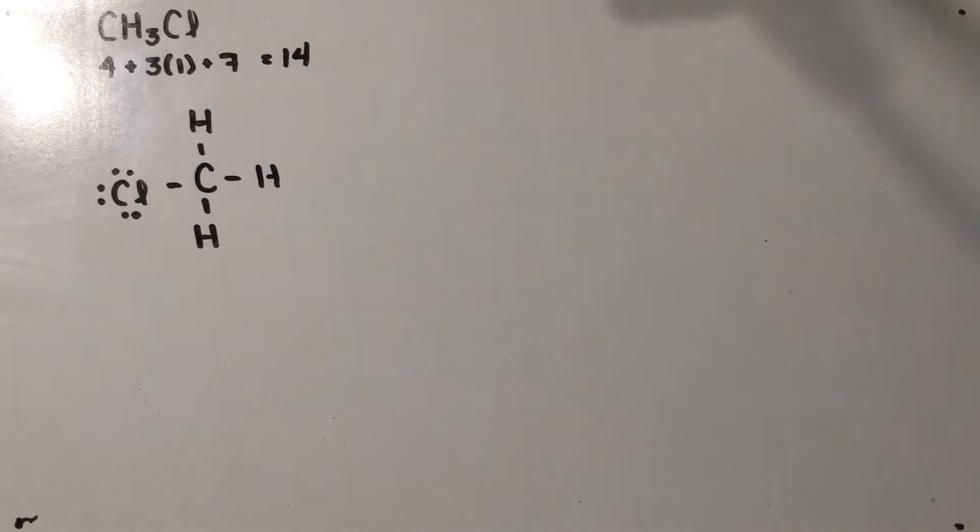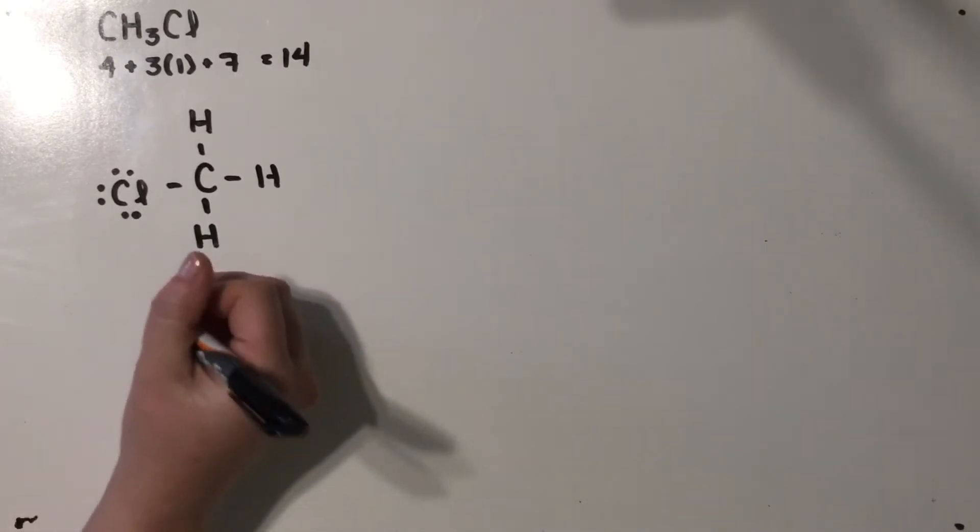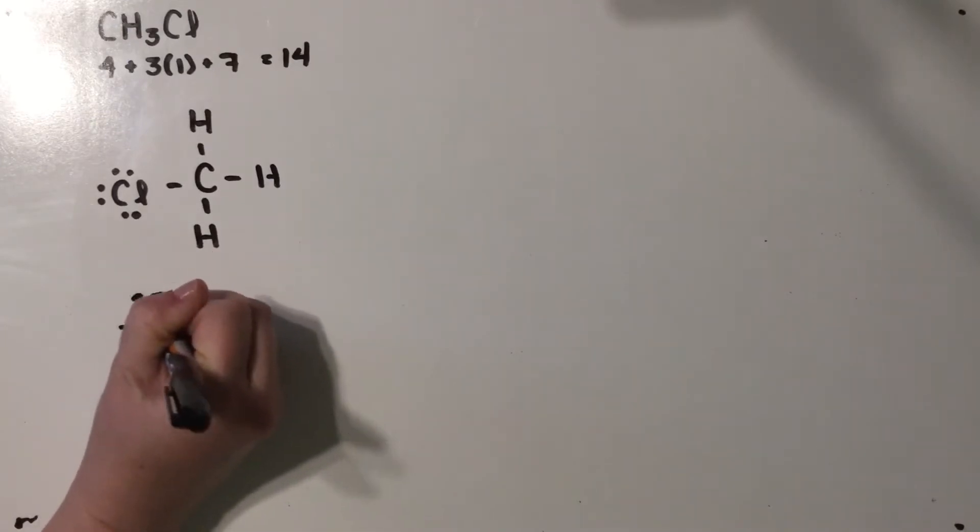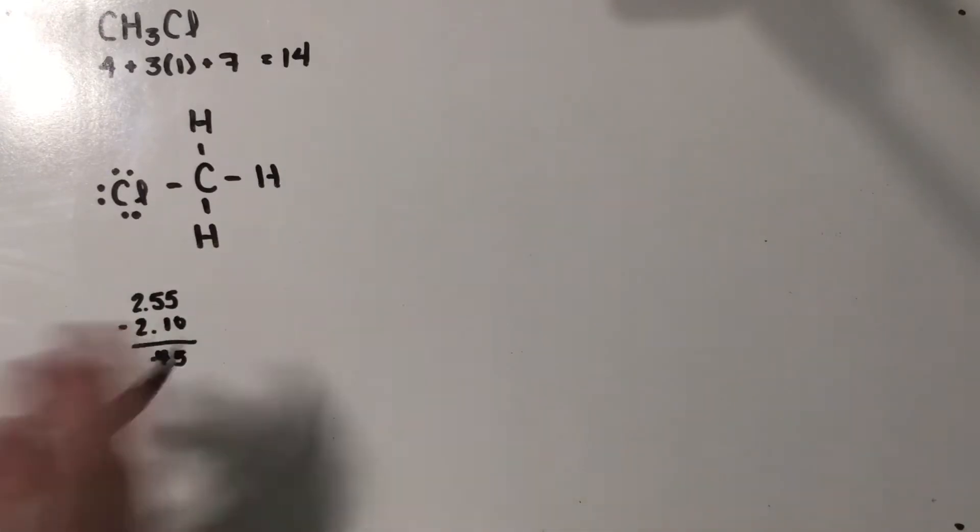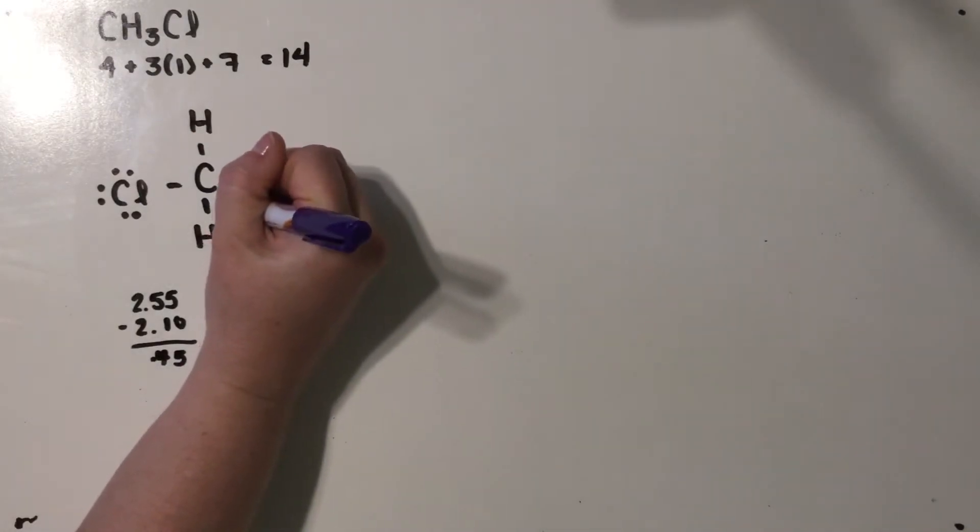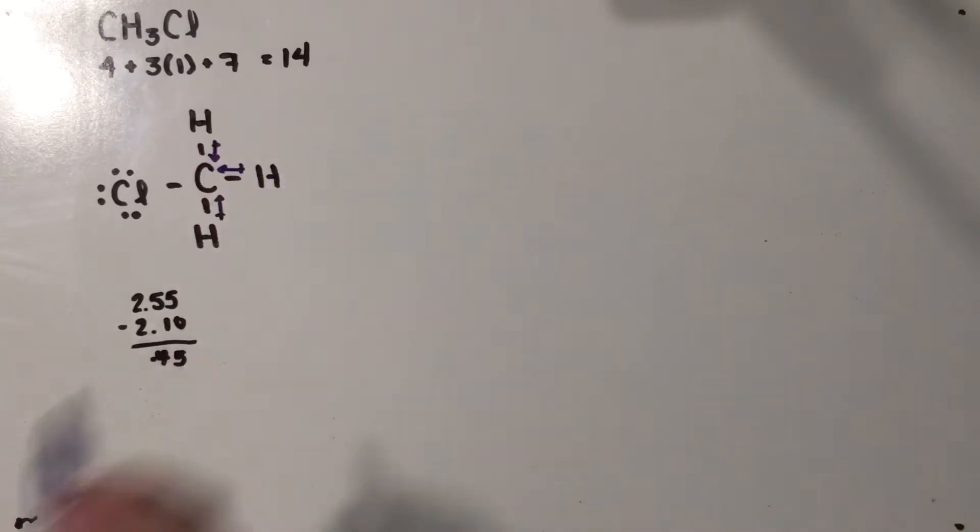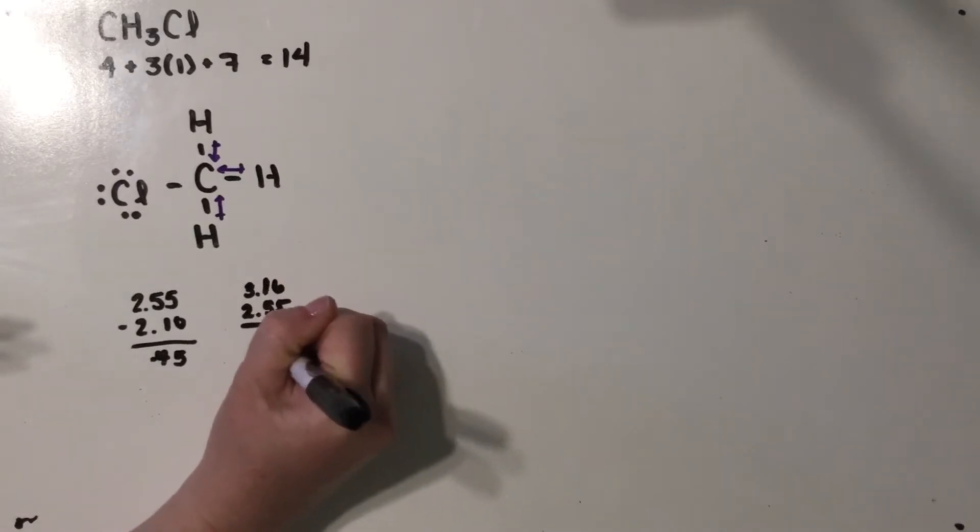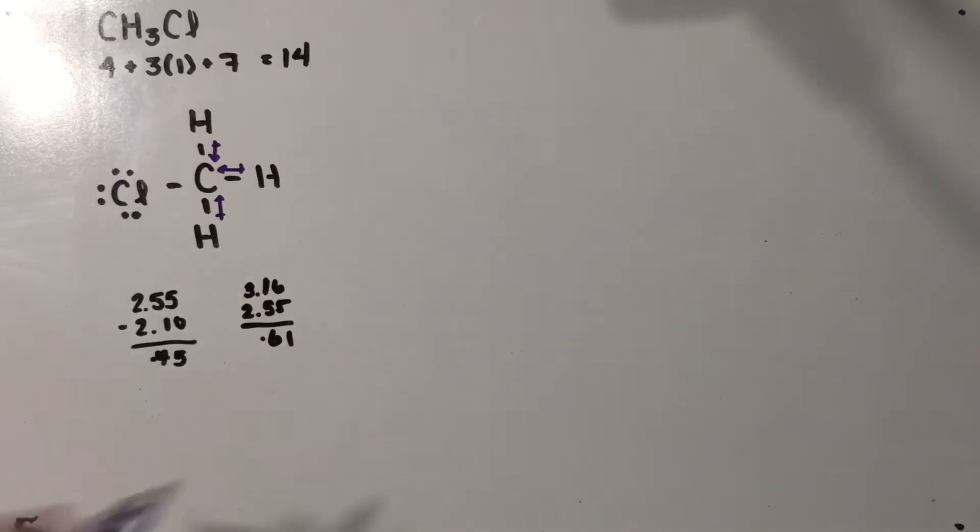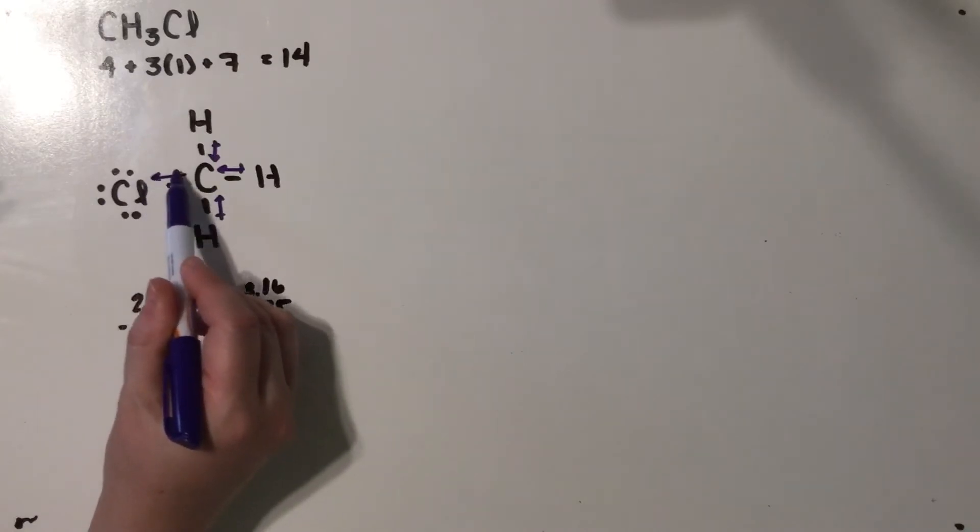So we have our best Lewis structure. We check our bond polarity, and in order to figure out our bond polarity, we subtract our electronegativity to find the difference. And we realize that we have an electronegativity difference of 0.45, which are polar bonds, and that would be between the carbon and the hydrogen. Carbon is more electronegative than hydrogen, so those bonds would look like this. And then we would also check the carbon-chlorine electronegativity difference. That's a 0.61 difference, also polar bond, this time pointing toward the chlorine.